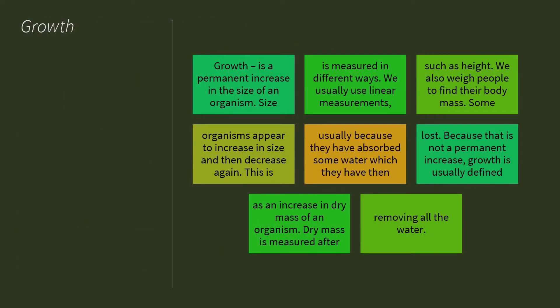The first organism that we will be looking at is growth. So growth is basically a permanent increase in size of an organism. Size is measured in different ways and we usually use a linear form of measurement such as weight. So we weigh people to find out their body mass.